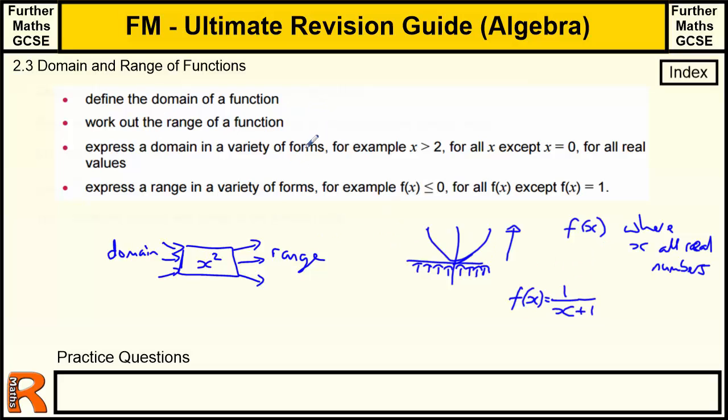So that's how we deal with the domain. The range, we work it out, but we have to think about what happens to the function so that we know what happens to the range. We need to be able to use different formats to express domains and ranges. So an example of that is x > 2 for all x except x = 0, or more commonly we use this f(x) notation. f(x) ≤ 0 for all f(x) except f(x) = 1. So this is how we explain what the values come out of a range of a function. So for the x squared function, f(x), which will be the x squared, will be greater than or equal to 0 for all values. And that's usually the standard sort of format we would use to explain stuff. Okay, let's go through some questions and see how that works out.